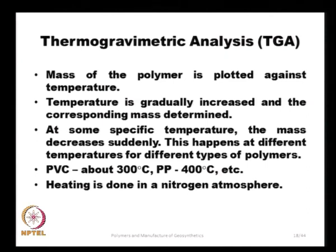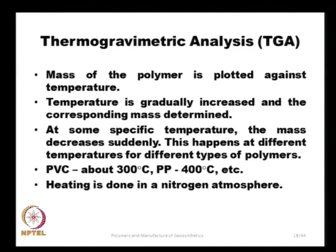In thermogravimetric analysis (TGA), the mass of the polymer is plotted against temperature. As temperature is gradually increased, at some specific temperature the mass decreases suddenly. This transition temperature differs for different polymers — for PVC it is 300°C, while for polypropylene it is 400°C. The heating is done in a nitrogen atmosphere in a highly controlled manner, and the temperature at which mass changes identifies the polymer.